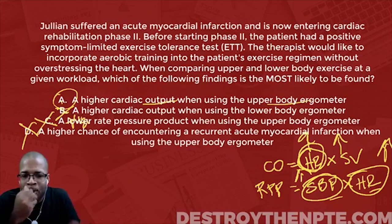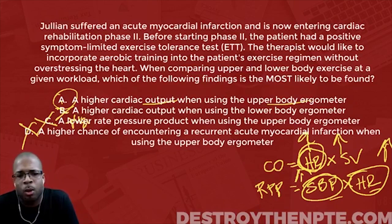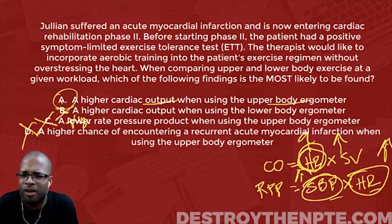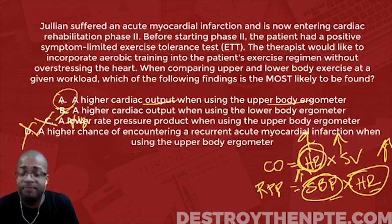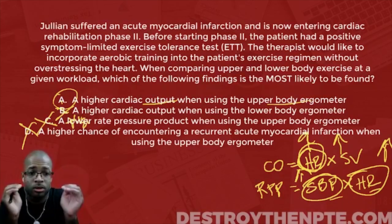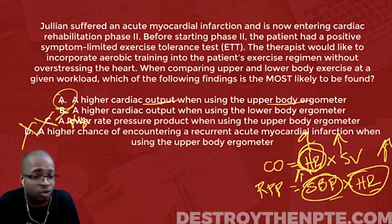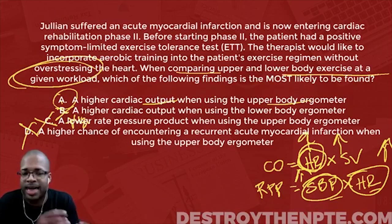Some of you might feel a little confused because the lower body has such bigger muscles — I just don't understand how the upper body would be stressing the heart even more. Here's the deal: if the lower body ergometer was at resistance level 15 and the upper body was at level five, yes, the lower body would be stressing the heart more. But we're saying at a given workload, when they're trying to reach the same resistance level, the upper body has to work a lot harder than the lower body, and that stresses the heart more. It really came down to this phrase: at a given workload.